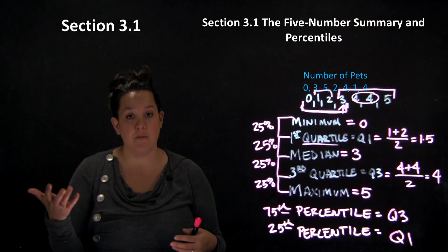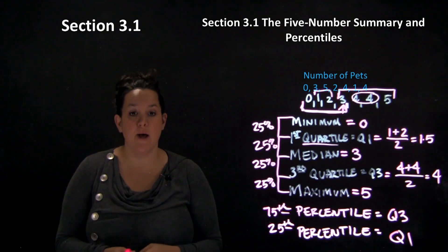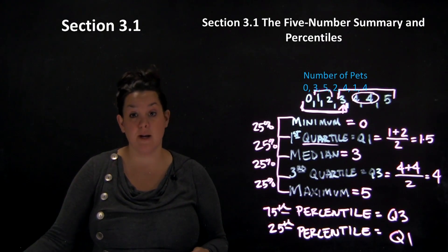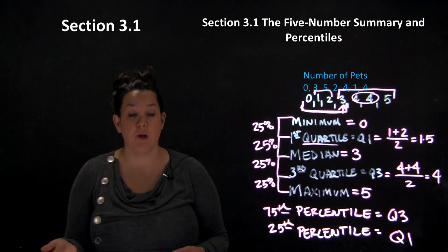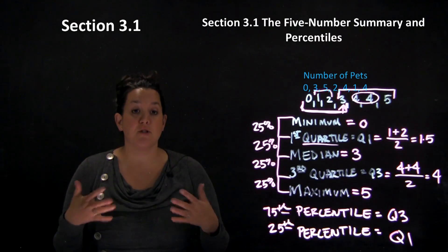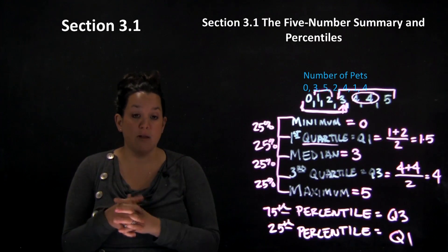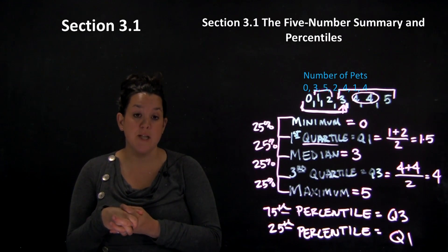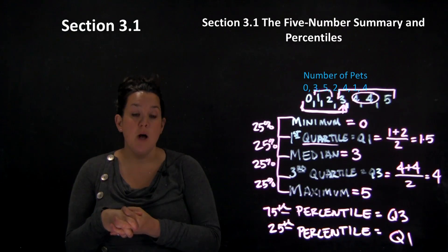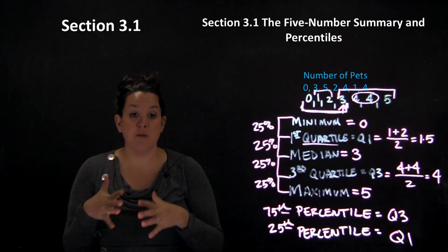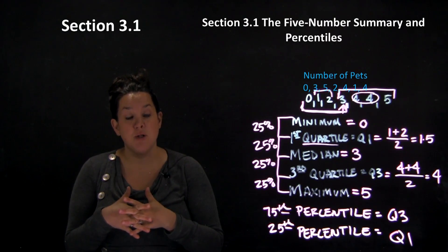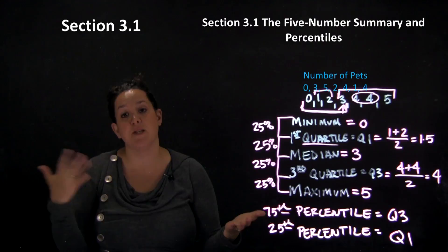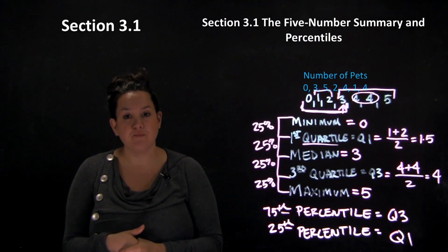So the 75th percentile has 75% below it, and the 25th percentile has 25% of the data below it. Today we've looked at the first numeric summaries for one quantitative variable — measurements that require the data to be put in order. We covered five number summaries and percentiles.